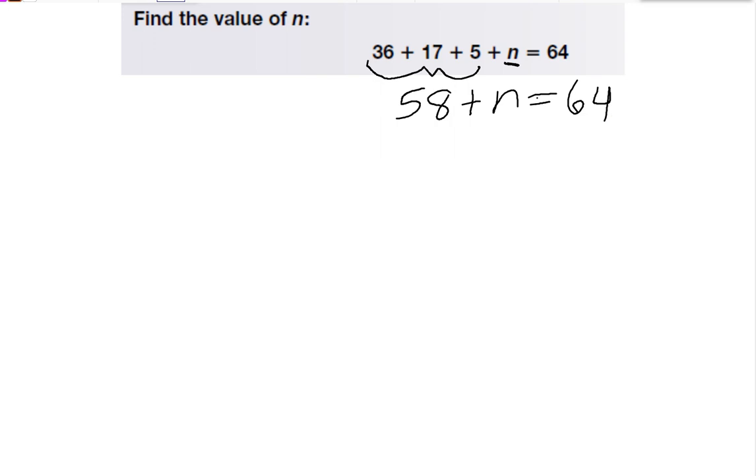So then, to find the missing addend, we would subtract 64 minus 58. So I have to borrow. 14 minus 8 is 6, and 5 minus 5 is 0. So that means that n is equal to 6. And if I put that back in, I would find that it is correct.